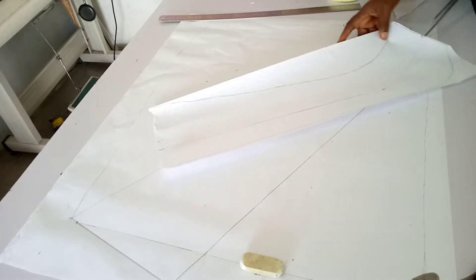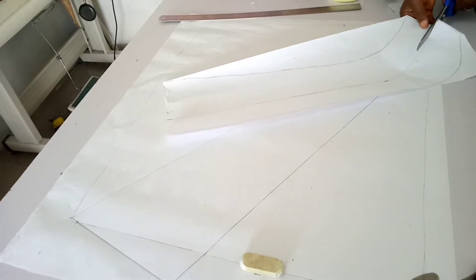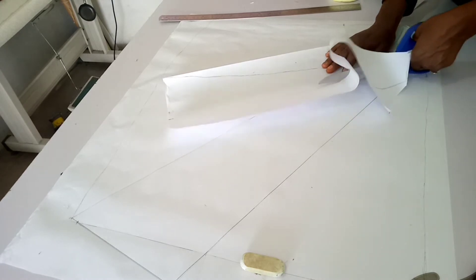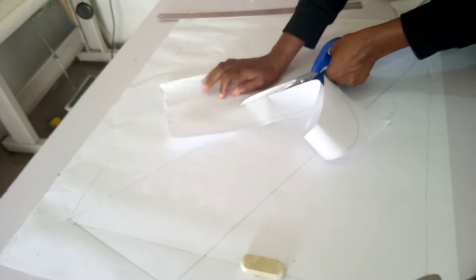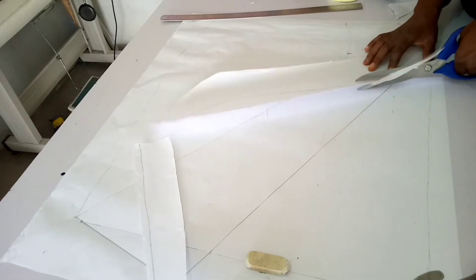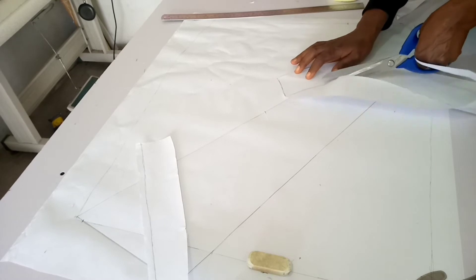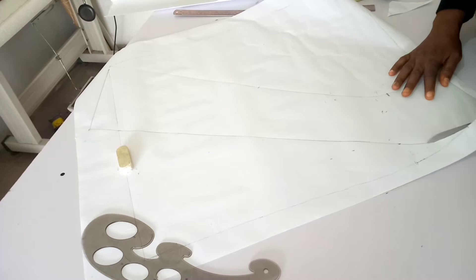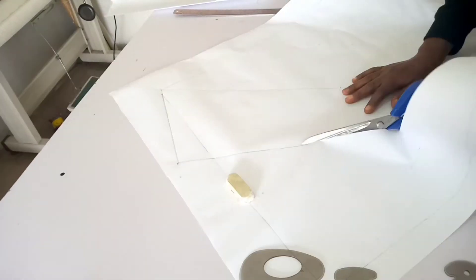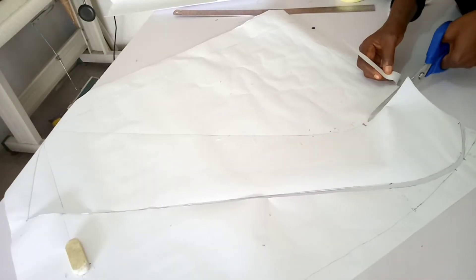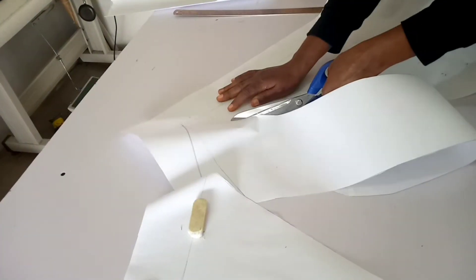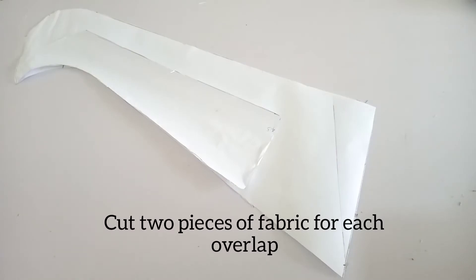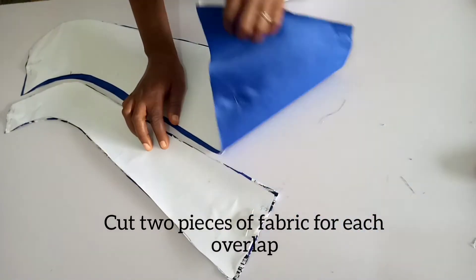So we are going to cut out our pattern. For the overlap, the small one like so. So just cut out. So after cutting the big, we will have this for the big and small overlap. We have cut the fabric and lining.